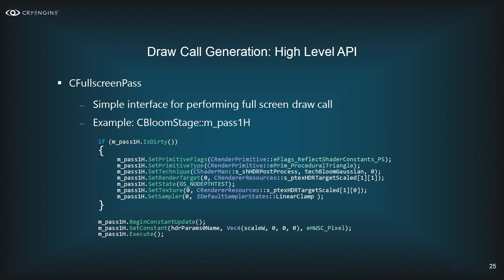Using a full screen triangle for full-screen effects is fastest on modern GPUs compared to two triangles (which share a rasterized diagonal line) or a full-screen quad. After setting state, you call BeginConstantUpdate to signal you're setting shader constants, then call SetConstant with a name and value, and finally call Execute to actually perform the draw call.